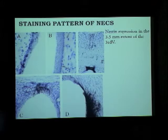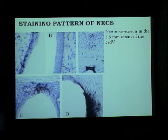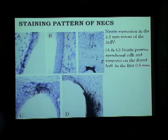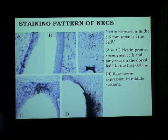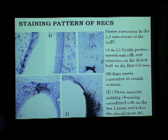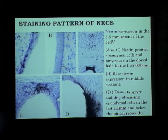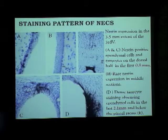Coming to the second part of my project — the staining pattern of nestin-expressing cells. Along the 3.5 mm extent of the third ventricle, in the first 0.8 mm you can see the nestin-positive ependymal cells and the tanycytes. We saw rare expression all along the middle 0.6 mm. And again in the last 2.1 mm there was dense tanycyte staining. There was a problem here because due to the dense tanycyte staining, most of the ventricular wall was obscured, and we couldn't quite make out whether there are any ependymal cells lying underneath — so that might be one shortcoming.